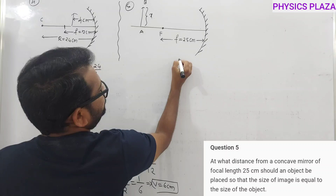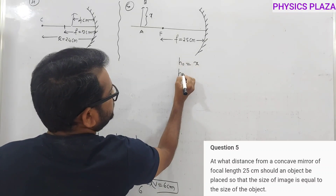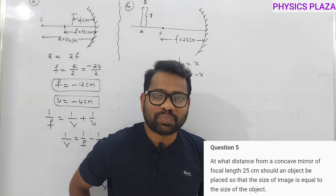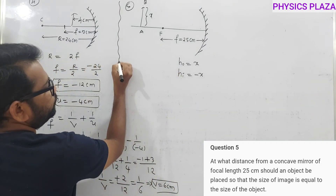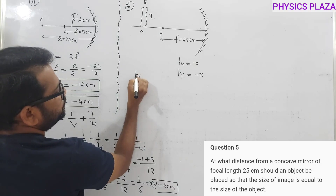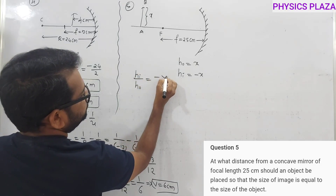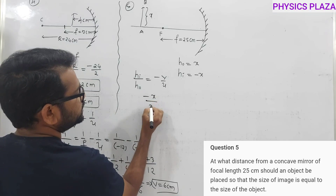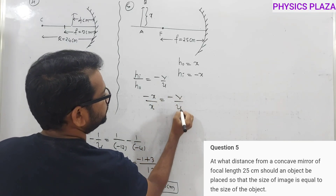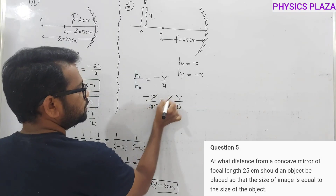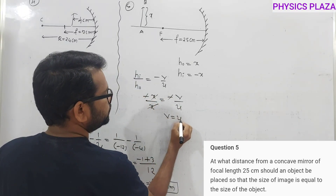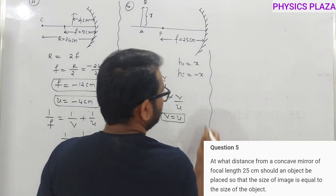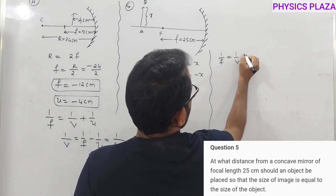However, let us solve it mathematically. Let object height = x; then image height = −x (real image, below principal axis). Using the magnification formula: image height / object height = −v/u, so −x/x = −v/u. This gives −1 = −v/u, therefore v = u.